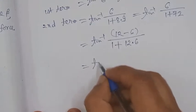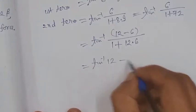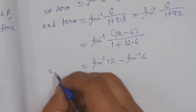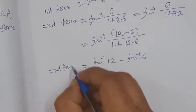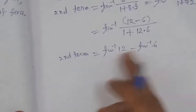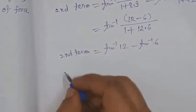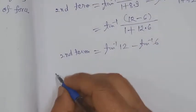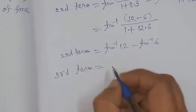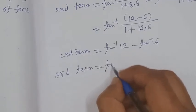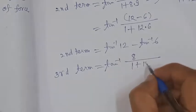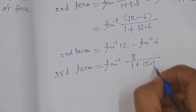This confirms the second term equals tan⁻¹12 - tan⁻¹6. The third term is tan⁻¹(8/(1+15·16)).